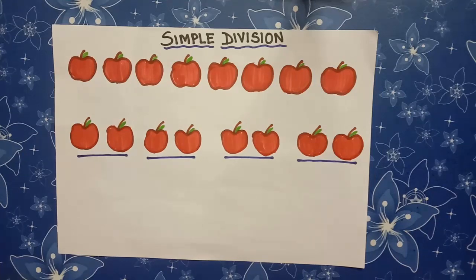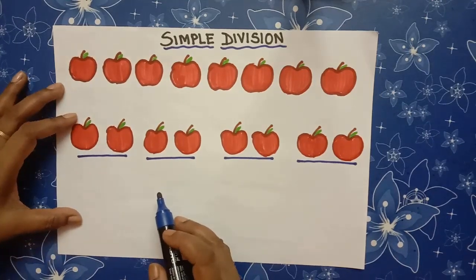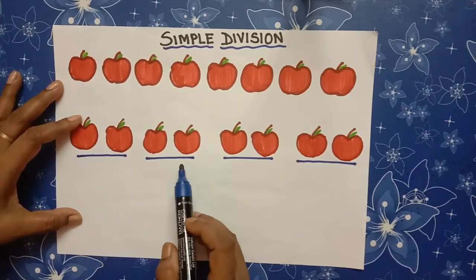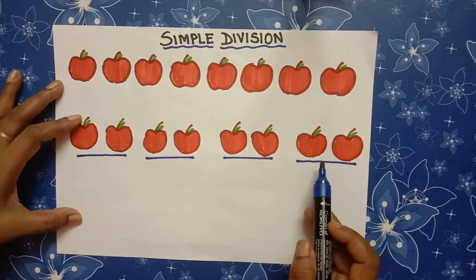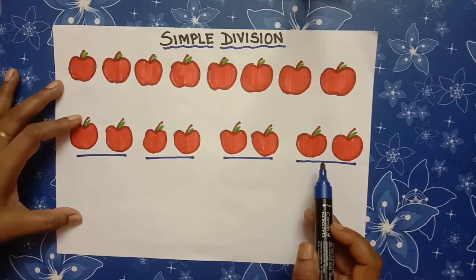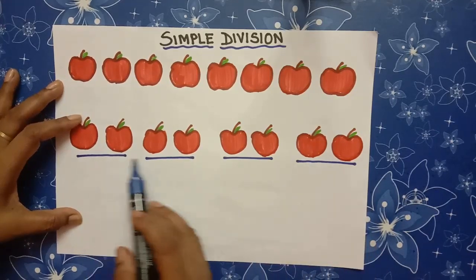Now, how many groups can be made? We see that we can make 4 groups. 1, 2, 3, 4. So, if we are dividing these apples among 4 children, each child gets 2 apples.